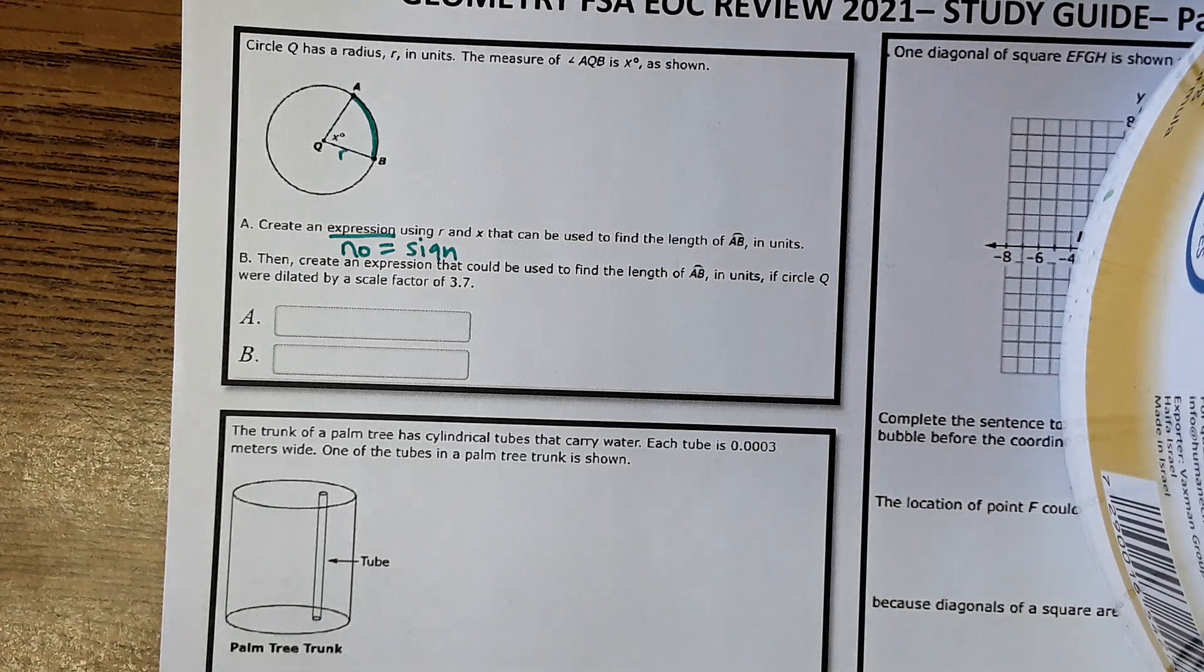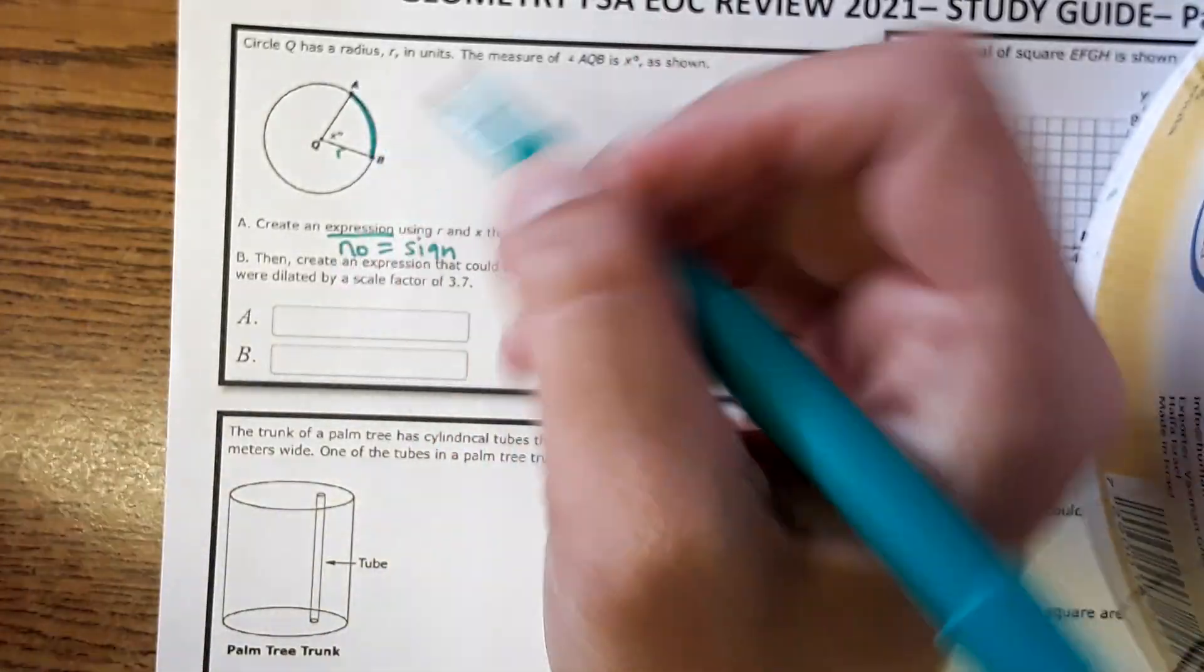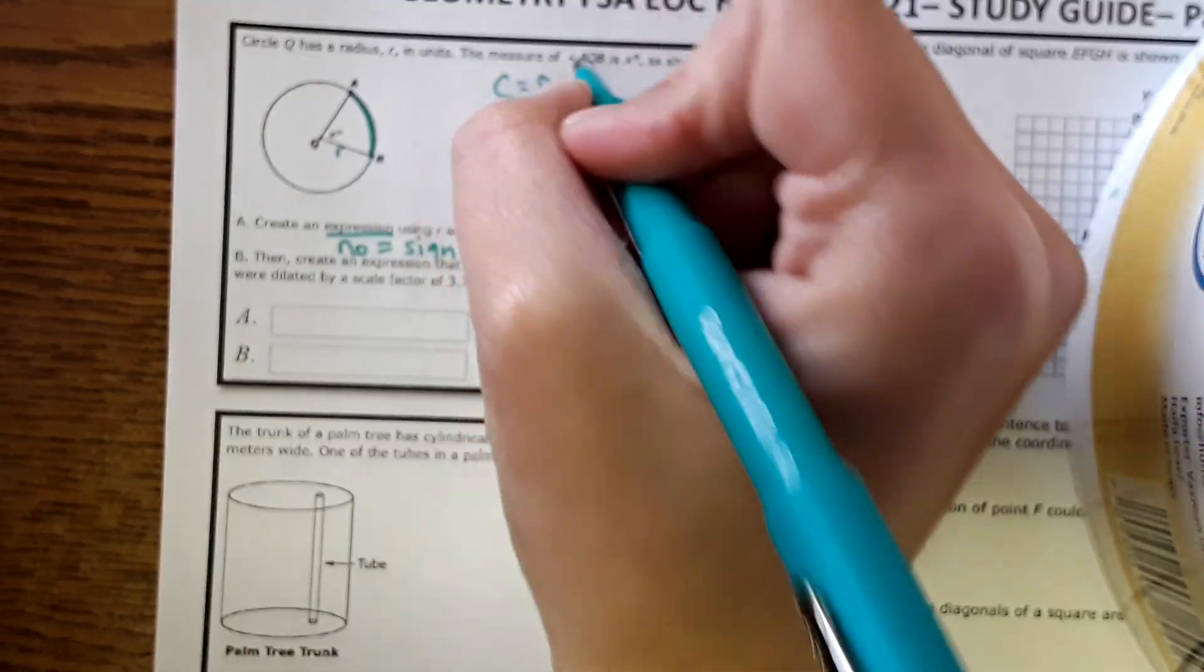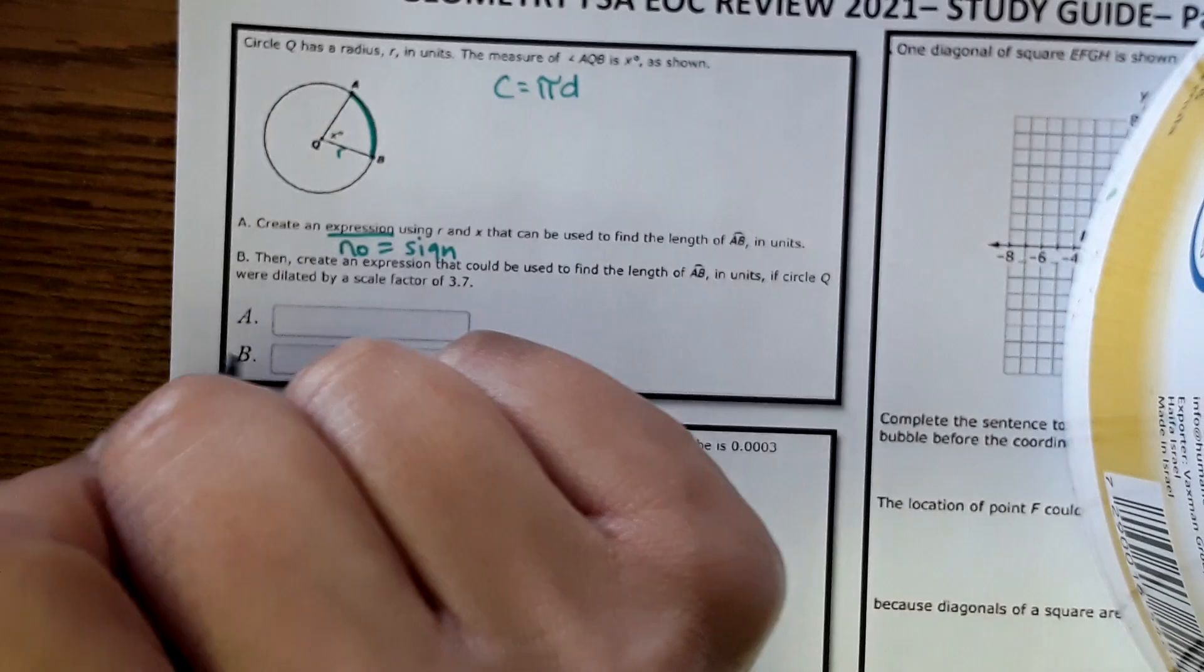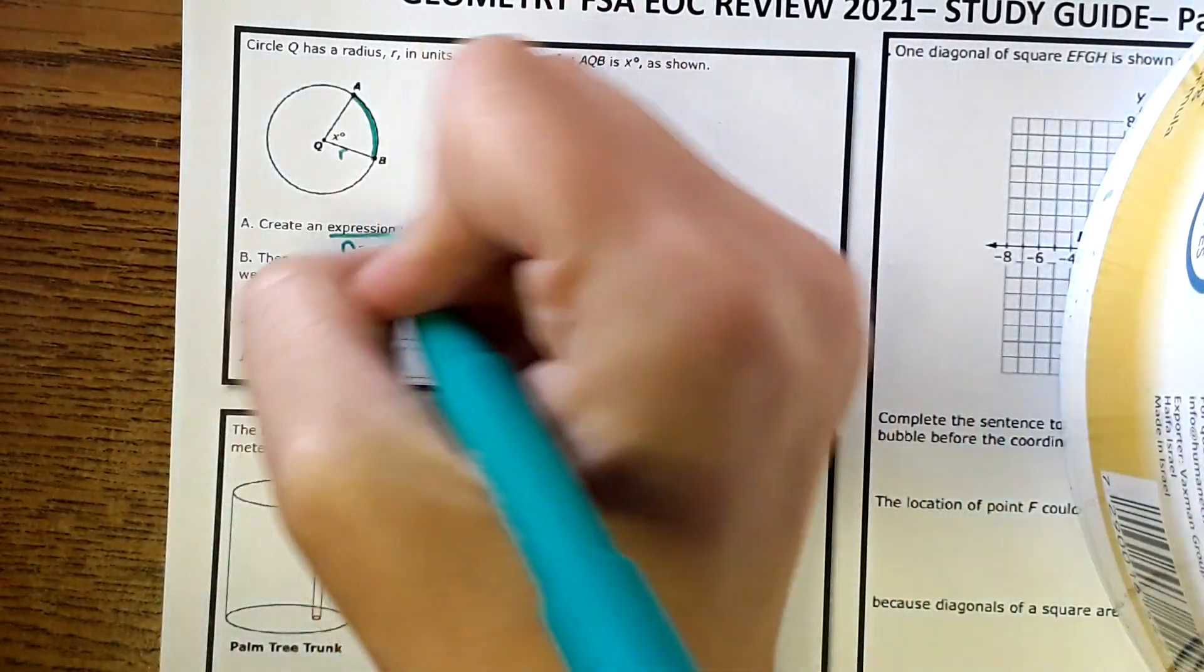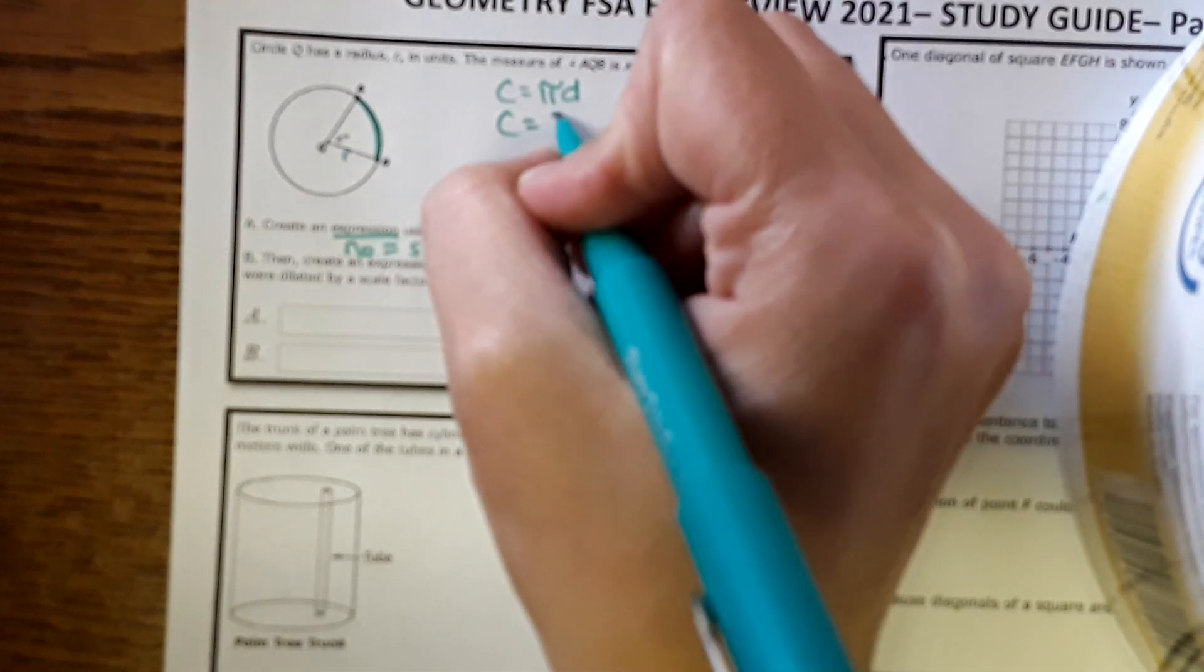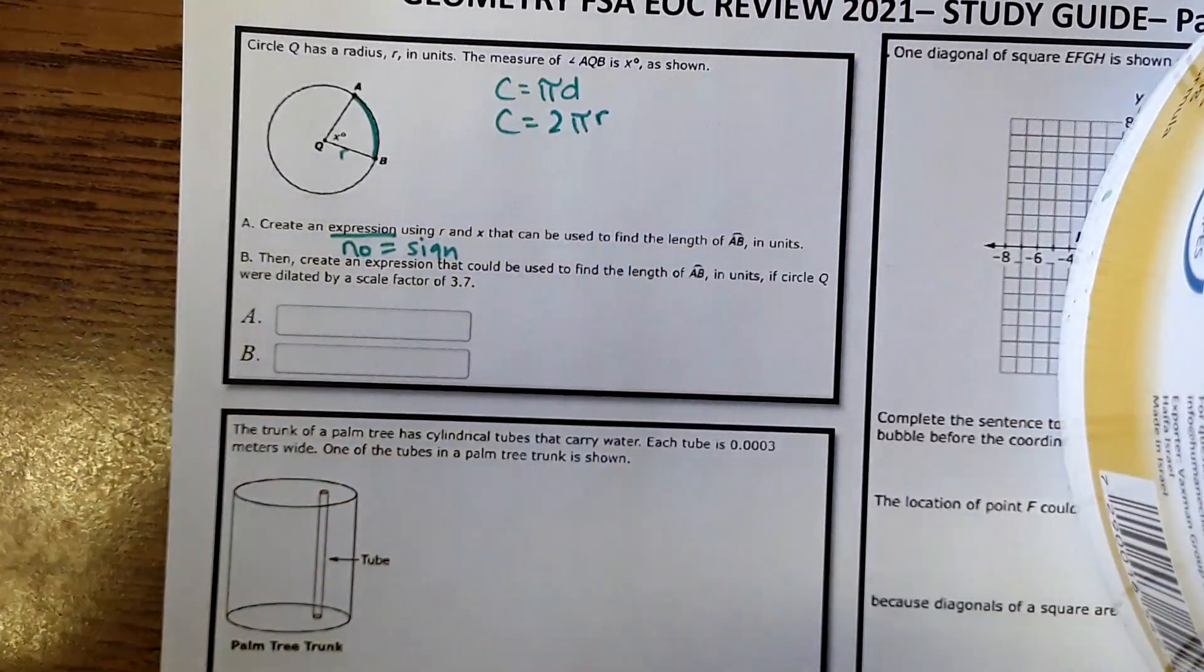Okay, so we need to find the length of this arc. All the way around here, the circumference would be pi times diameter. It says to write this expression in terms of R, so circumference would be 2 pi R, like that.